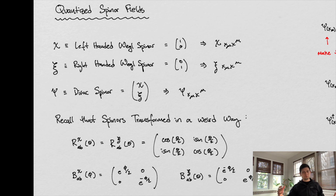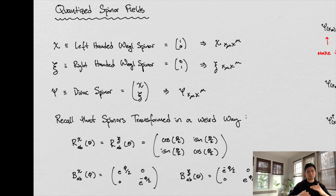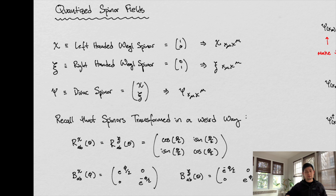Our prescription for quantizing fields starts with a Lagrangian — that's classical field theory. From the Lagrangian we get our equations of motion, and from those equations of motion we get solutions. From those solutions we obtain the conjugate momentum, and then we apply the Heisenberg uncertainty principle, which brings us into the realm of quantum physics. Upon that application we see what the commutation relationships between the annihilation operators and the creation operators are.